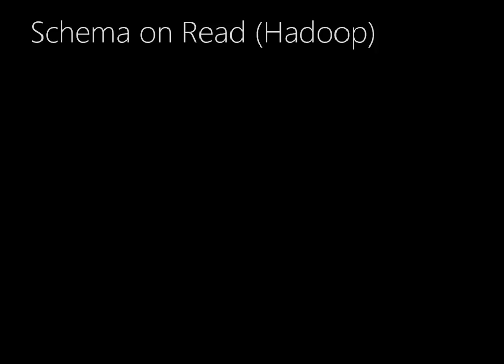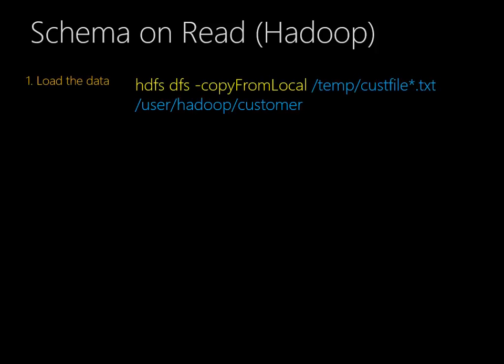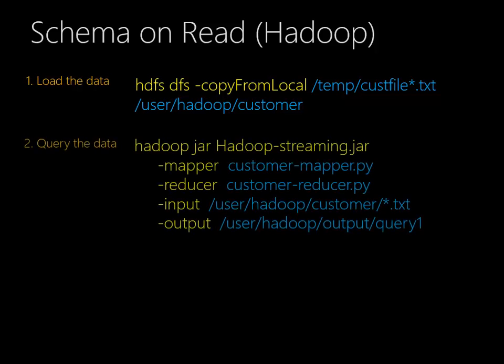Hadoop and other big data technologies generally use schema on read. Schema on read follows a different sequence. First, it loads the data — this is an HDFS command to load data into the equivalent of a customer table within Hadoop. We say HDFS DFS copy-from-local, and so on. What that does is reach out and find all of the text files in this temp folder that begin with 'cusfile' and end with '.txt', and pull them into the HDFS file system, distributing them and doing a lot of things we'll talk about in a future lesson.